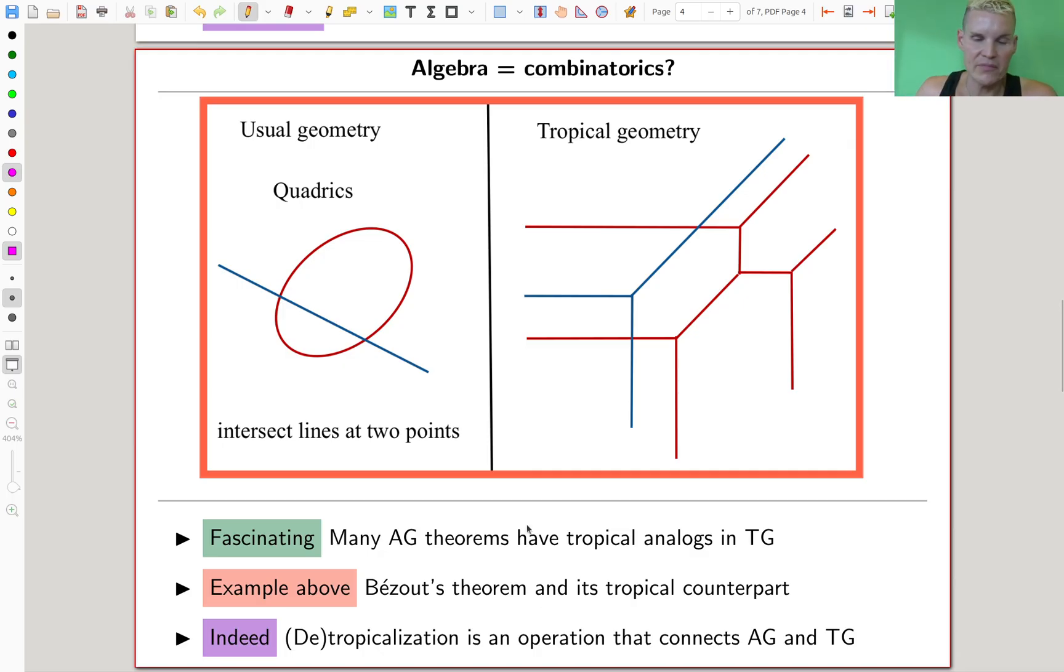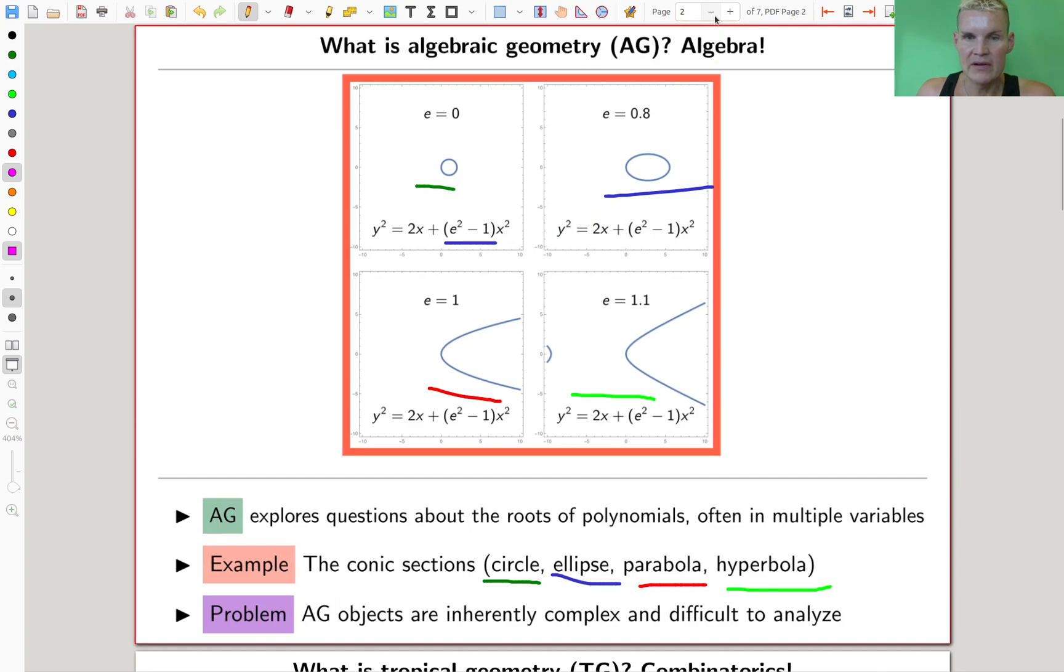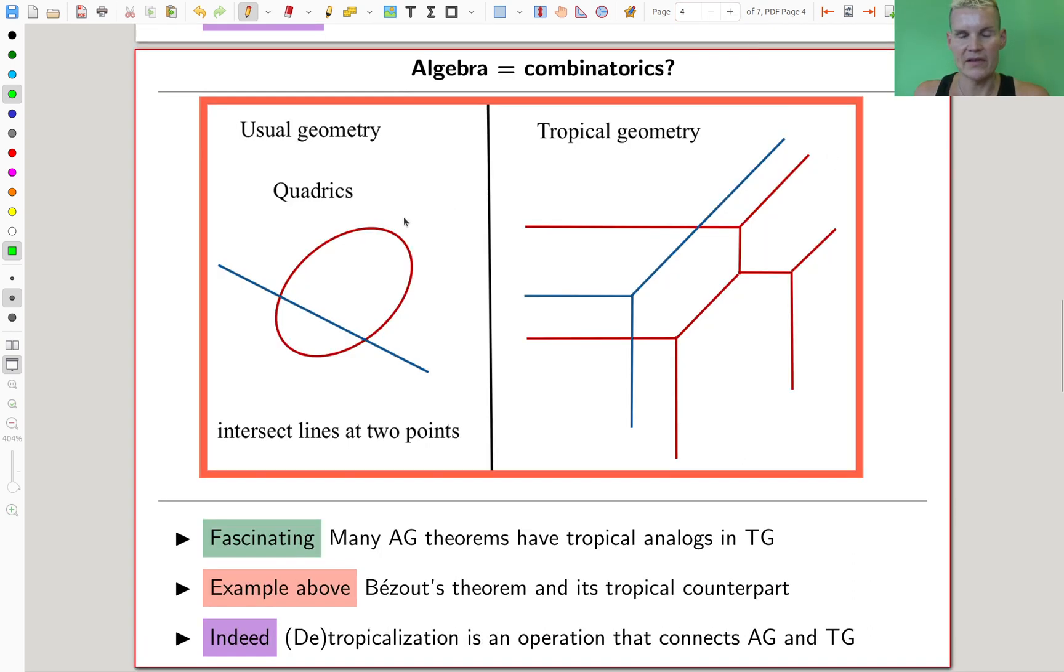Bezout's theorem: a circle, a line intersects in two points generically at least. If you cut a line here, you end up with two points generically. If you want a statement that is completely precise, you need to go to projective geometry, but let's just say generically. You always have two intersection points. It's a degree one polynomial, a line and a degree two polynomial, a conic section. That's kind of true in general.